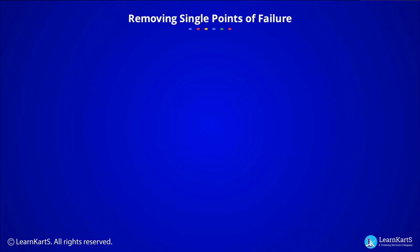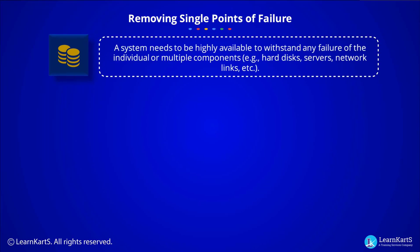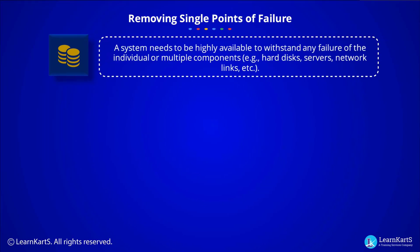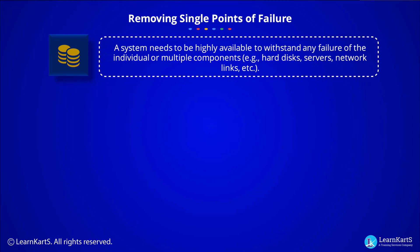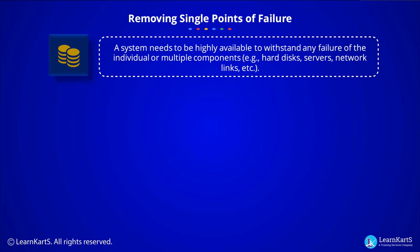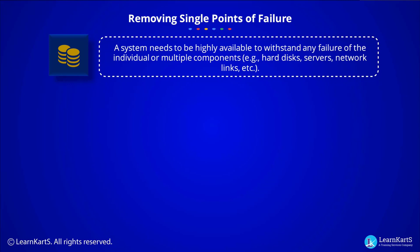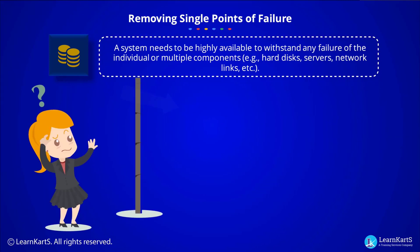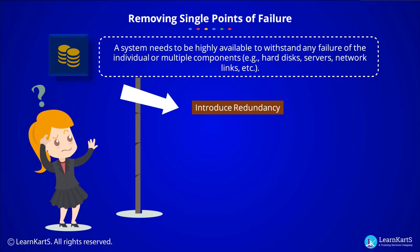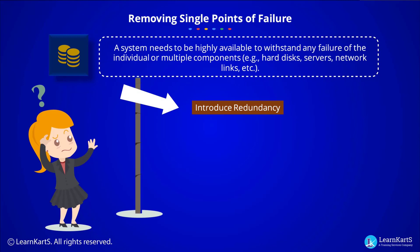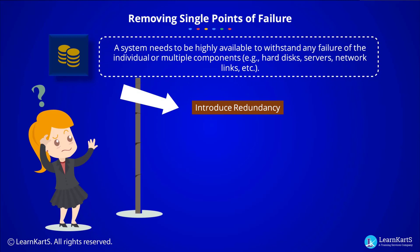Removing single points of failure: a production system needs to be highly available to withstand any failure of individual or multiple components such as hot disks, servers, and network links. Single points of failure can be removed by introducing redundancy, which means you have multiple resources for the same task.